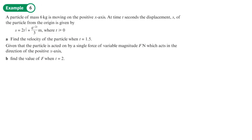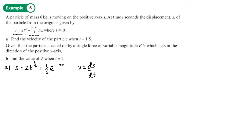A particle of mass 6 kg is moving on the positive x-axis. At time t seconds the displacement s is given by s = 2t^(3/2) + (1/3)e^(−2t). Find the velocity of the particle when t = 1.5 seconds. First we need to find the expression for velocity by differentiating the displacement with respect to t.